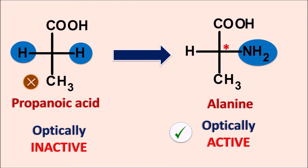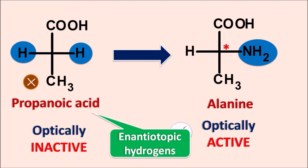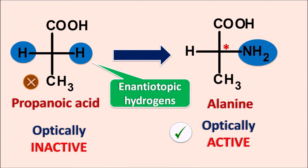Since alanine is optically active, it can exist as a pair of enantiomers. So propanoic acid has two hydrogens which are equivalent, and any one can be removed to produce enantiomers. These hydrogens are called enantiotopic hydrogens. Enantiotopic hydrogens produce enantiomers when they are replaced by a different group.